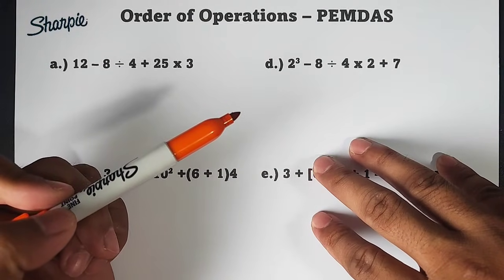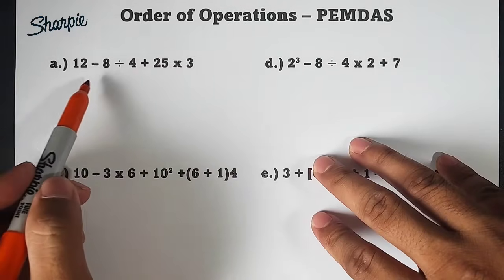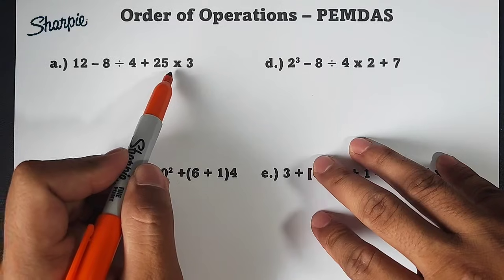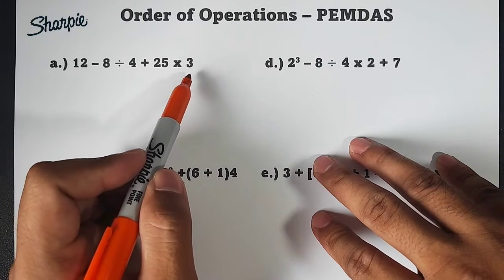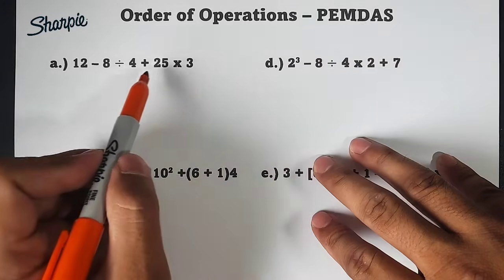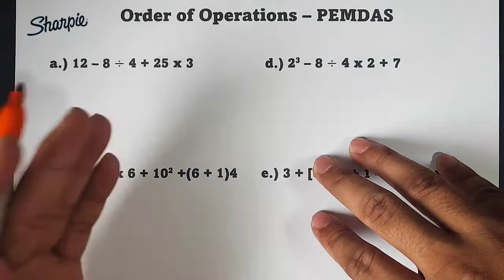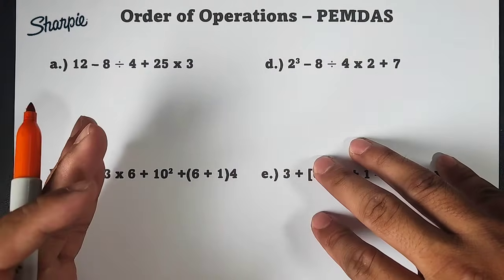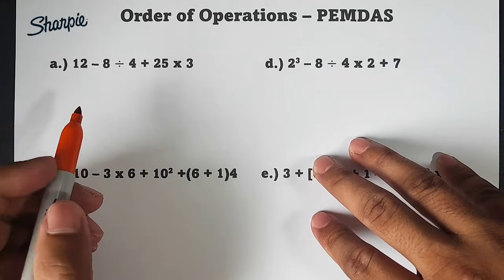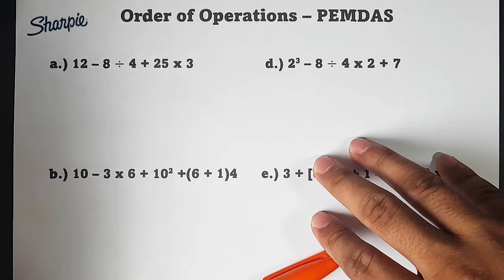But sir, what will be our basis? So look at this example. In example letter A, we have 8 divided by 4 and 25 times 3. If we follow this, we'll make a mistake. Since division is on the left side, we will do division first. And that's our first step here.